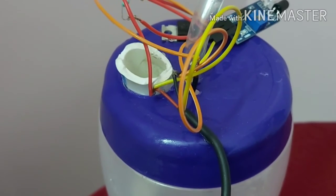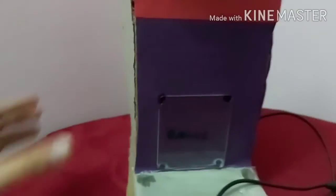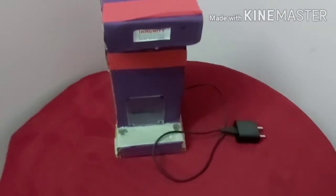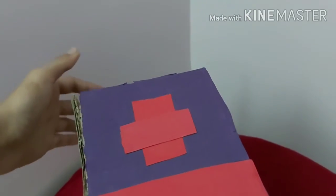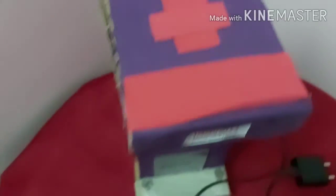And this is the box which I have made. This is just like an automatic hand sanitizer dispenser machine. I have prepared it with cardboard. In the back side, the flip system is there.